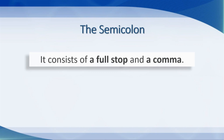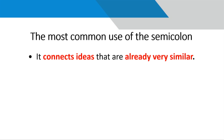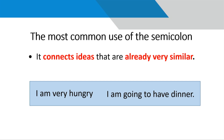It consists of a full stop and a comma, one on top of the other. This is what the semi-colon looks like. The most common use of the semi-colon is to connect ideas that are already very similar. For example: 'I am very hungry; I am going to have dinner.' The semi-colon here serves to join these two related ideas — being very hungry and having dinner.